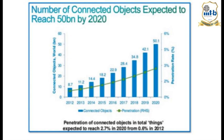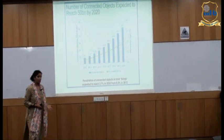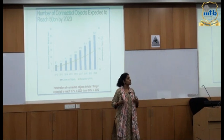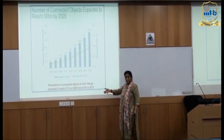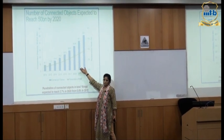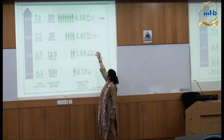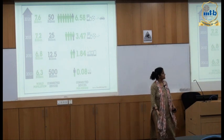The green line shows penetration — how many of all the things we have in the world have become smart. Per person, in 2003 with a world population of 6.3 billion, we had only 500 million connected smart devices — 0.08 devices per person. By 2020, we expect 6.58 smart devices per person to be connected to the Internet, illustrating the scale at which IoT is growing.